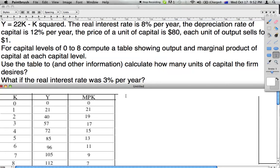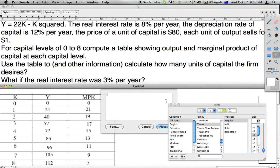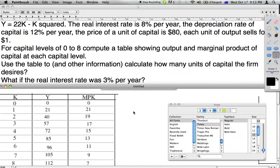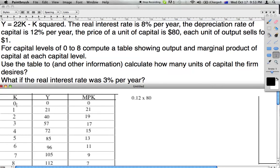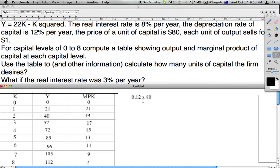The first component we will need is depreciation times 80. For each unit of capital it's $80 to buy, and it depreciates in one year by 12%. This is a cost, so when we're figuring out the user cost of capital we must include this.